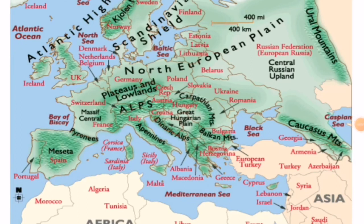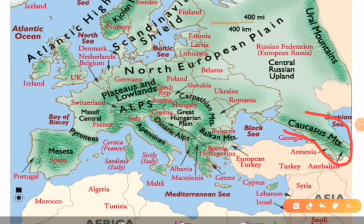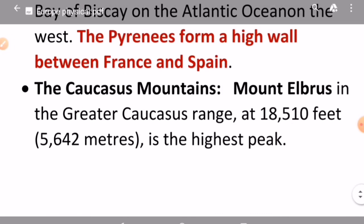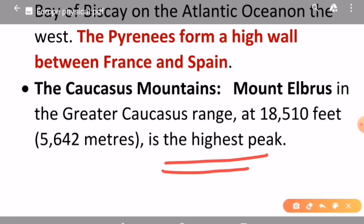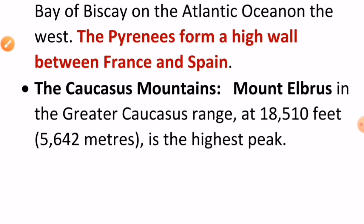The last important mountain range is the Caucasus Mountains, which you can see on the map. Mount Elbrus is the highest peak of the greater Caucasus range. With the Caucasus Mountains, we conclude the video covering all the important mountain ranges of Europe. In the next video we will start with the important water bodies of Europe. Thank you for watching.